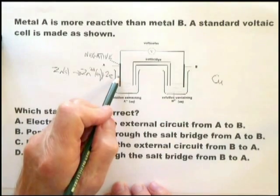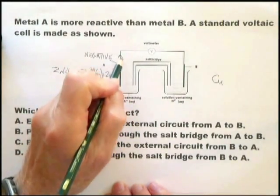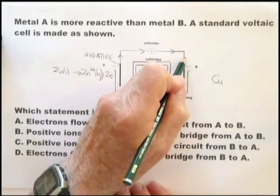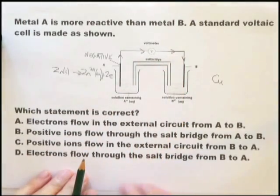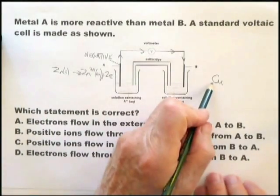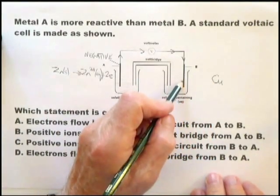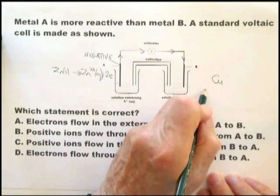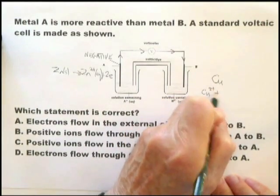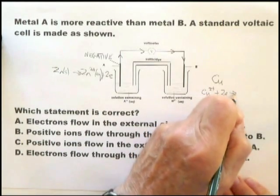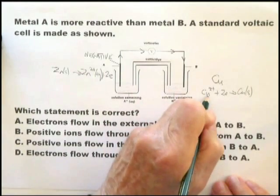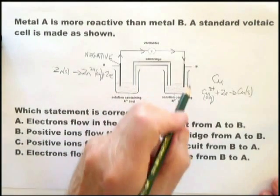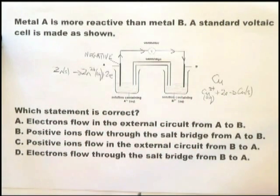Those electrons move up the cable — the external circuit — through the voltmeter, and into the copper electrode. At the surface of the copper electrode, they react with the copper ions: Cu²⁺ plus 2e⁻ goes to Cu solid. If you accept this, then there are a number of things that follow from this.